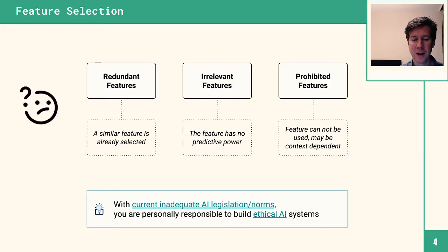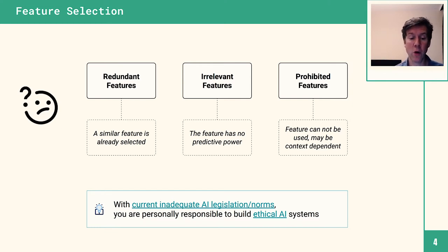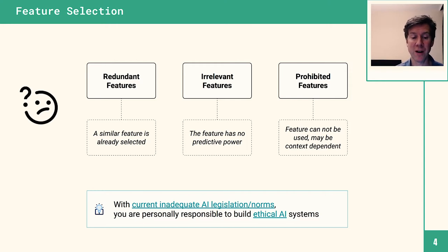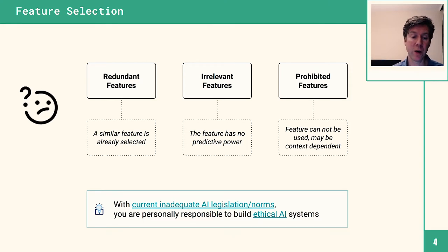Let's get started with feature selection, which is a very big topic. In the first introduction to machine learning lecture we introduced this topic briefly. When selecting features, some undesirable properties are that they're redundant. If you've already selected a similar feature — for example, temperature in Celsius and then temperature in Fahrenheit — that's a redundant feature. It won't add to the predictive capability of your model, will add more compute, and might mean it takes longer for your model to converge. So redundant features should be removed.